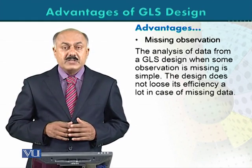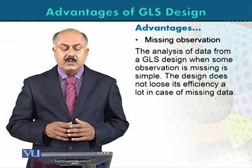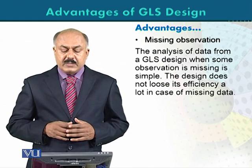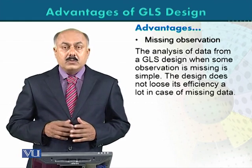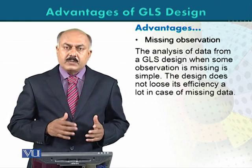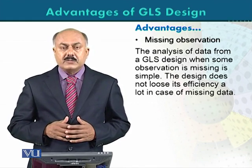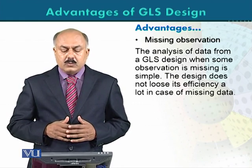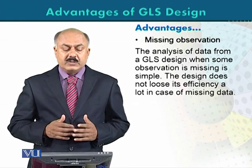The third advantage is regarding missing observations. The analysis of data from a Greco-Latin square design when some observation is missing is simple. The design does not lose its efficiency a lot in the case of missing data. So if a missing observation exists in data from a Greco-Latin square design, there is no significant loss of efficiency in the analysis. This design is comparatively less affected by missing observations.